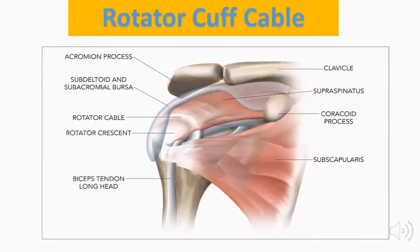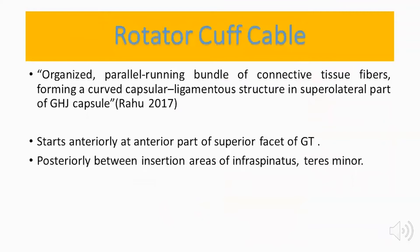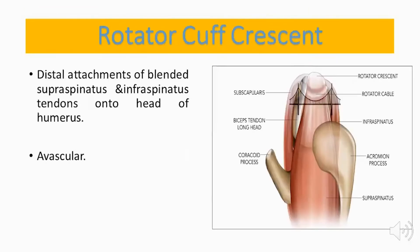Another point in the anatomy is the rotator cuff cable — an organized parallel bundle of connective tissue thickening forming a curved capsular structure on the superior lateral aspect of the glenohumeral capsule. It starts anteriorly at the anterior part of the superior facet of the greater tuberosity and extends posteriorly between the insertion areas of the infraspinatus and teres minor. Additionally, the rotator cuff crescent is the distal attachment of the blended supraspinatus and infraspinatus tendons onto the head of the humerus; this area is avascular and is the most common site for rotator cuff tears.